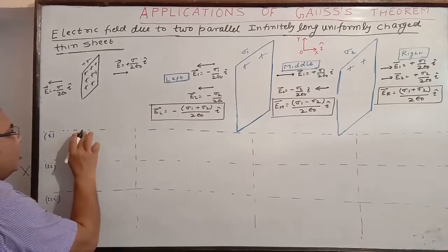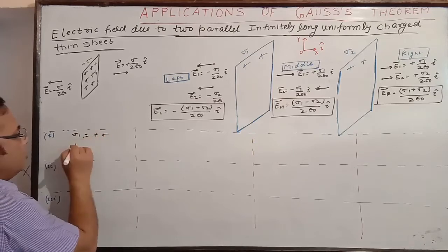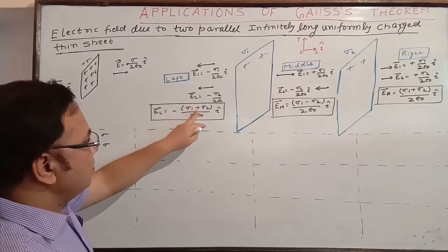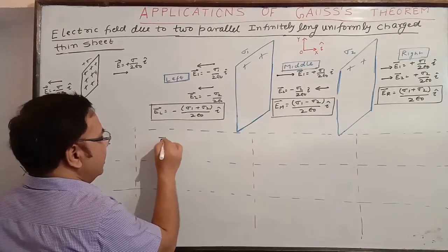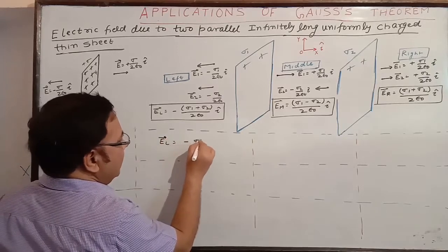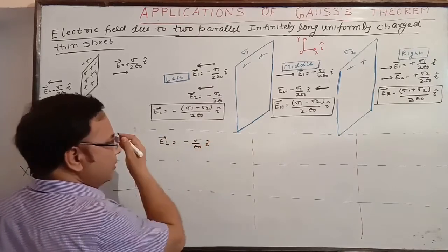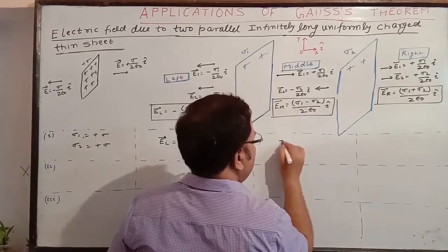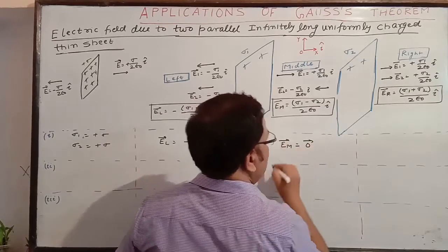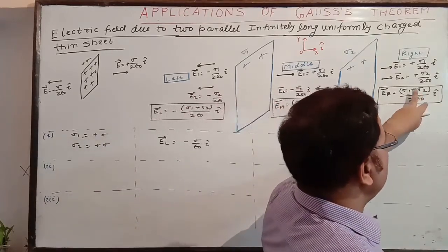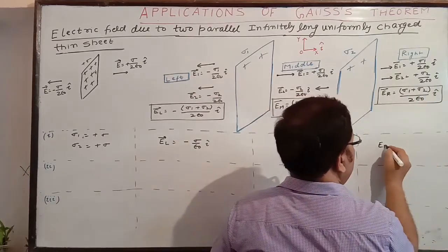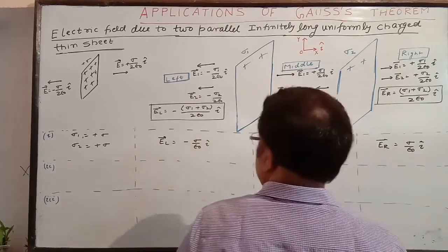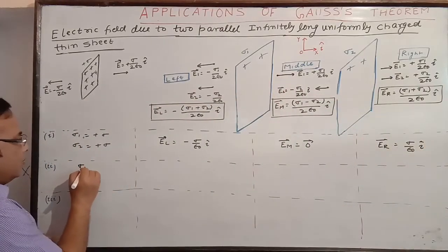Special Case 1: sigma_1 = +sigma and sigma_2 = +sigma. On the left side, the two sigma values add: net field = -sigma / epsilon_naught i-hat (towards left). In the middle, sigma - sigma = 0, so E_middle = 0. On the rightmost side, sigma + sigma gives 2sigma, and dividing by 2 epsilon_naught gives E_right = sigma / epsilon_naught i-hat.